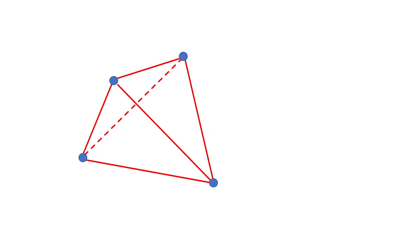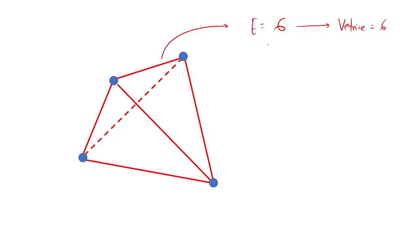If we want to make an octahedron from the tetrahedron, notice that a regular tetrahedron has six edges and an octahedron has six vertices. So we can start choosing the midpoints of the edges of the regular tetrahedron.